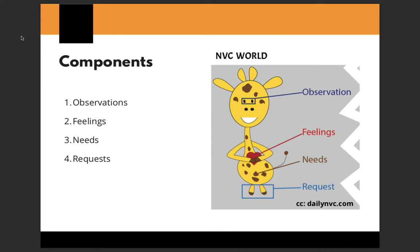There are four major components of this framework. First is observation — whatever we see, hear, or touch — the objective reality. Second are our feelings, our emotions. Third are our needs — what needs lie behind those emotions. And fourth are the requests we can make to the other person. We'll study all four in a bit of detail now.